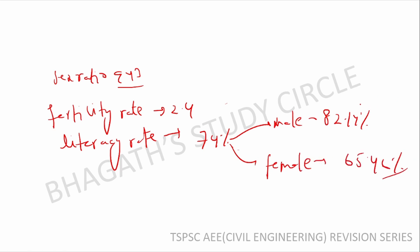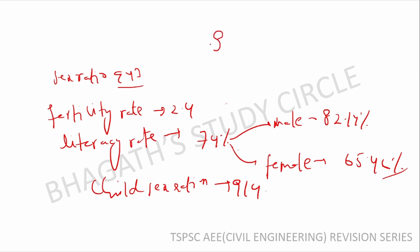The child sex ratio is 940. These are the important census questions for today. Thank you for watching. Please like, subscribe, and share with your friends. Keep learning, all the best!